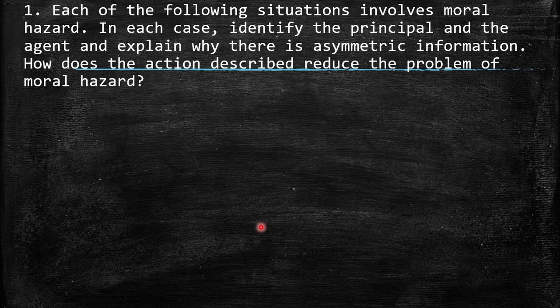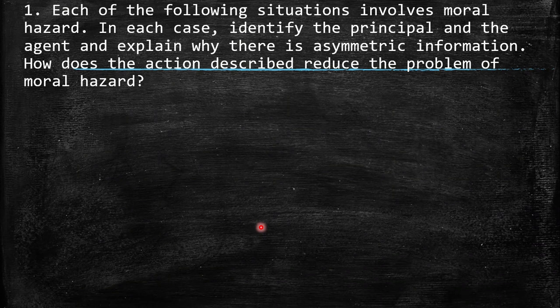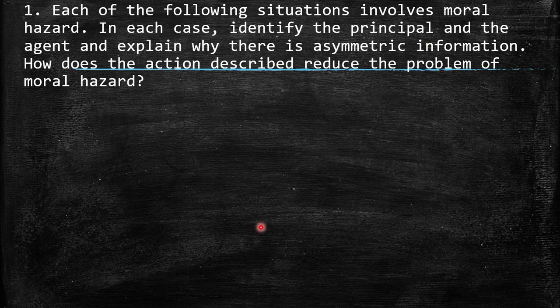The first question involves moral hazard situations. In each case, we identify the principal and the agent and explain why there is asymmetric information. When we talk about moral hazard, remember there is a risk inside the situation, because maybe in order to pursue better results, you avoid behaving correctly.